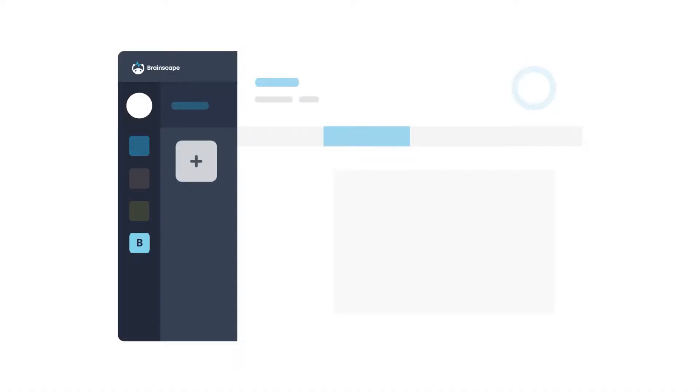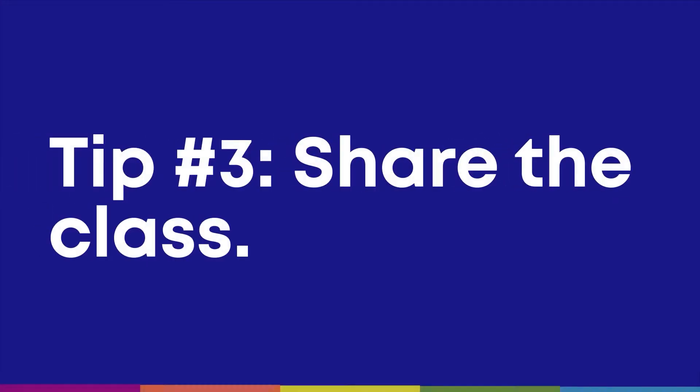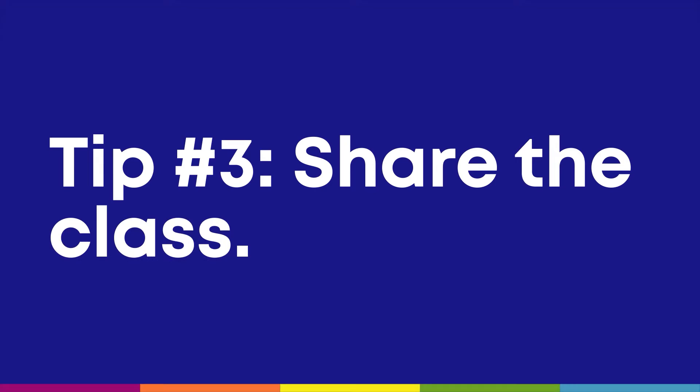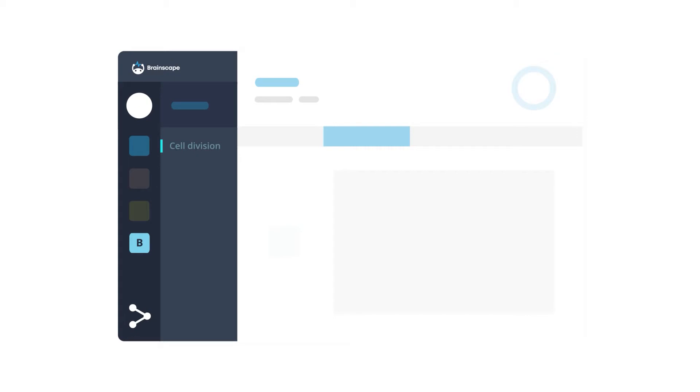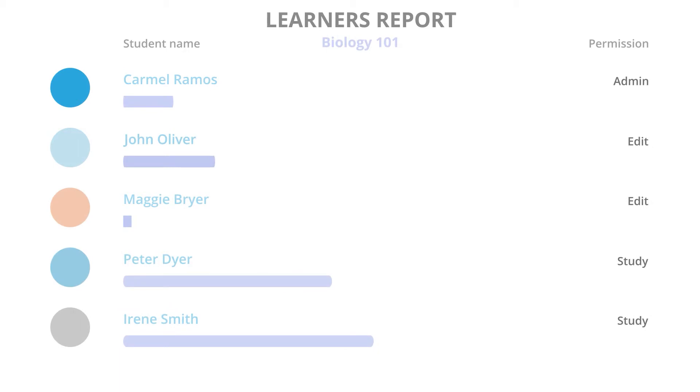Think of this as your outline, where each deck typically corresponds to a chapter in the textbook or a specific lecture topic or video that the students have to watch and take notes on. Once you've got that shell of your flashcard sandbox all set up with all your decks named, then you're ready to start inviting other students. Just click the share button, choose your method of sharing, and watch students pop up on your learner's panel as they join, where you can also manage their editing permissions however you want.